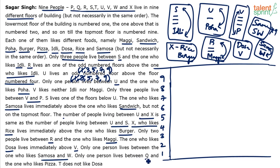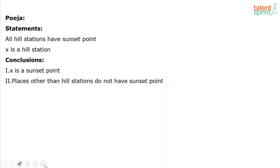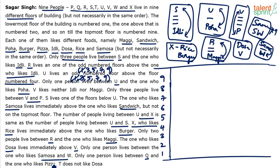Only one person lives between Q and the one who likes pizza. And T does not like dosa.